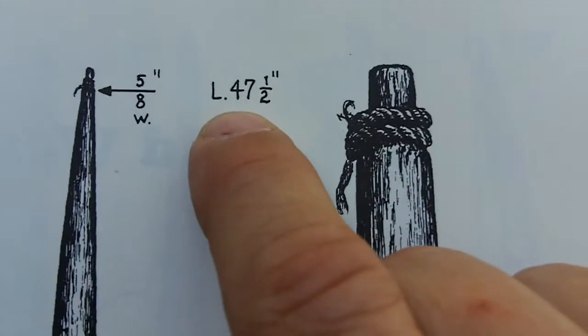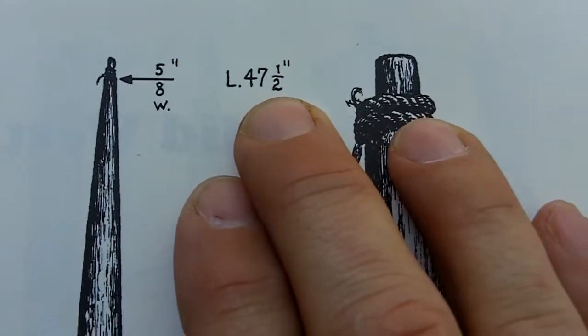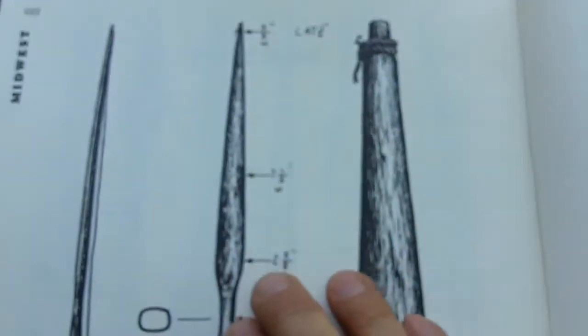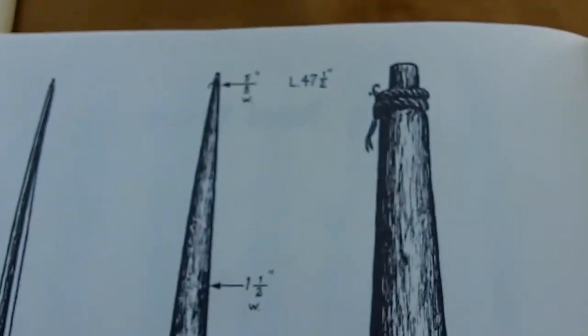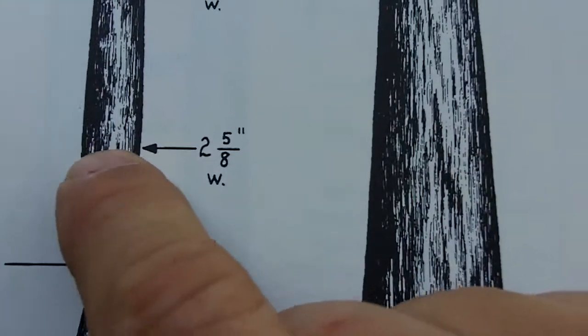The length on this bow is 47.5, the one I'm going to make will be 42 inches, and I'm going to shoot for a 24-inch draw. I'm not sure if I'll be able to do it, but I am going to use this design. I might have to go a little wider.